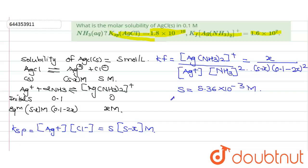So here the molar solubility of AgCl is 5.36 × 10^-3 molar.